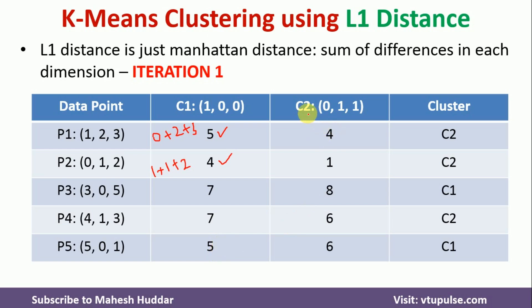Next, the distance from C2 to P1: 0 minus 1 is minus 1 with absolute value 1, 1 minus 2 is minus 1 with absolute value 1, and 1 minus 3 is minus 2 with absolute value 2. Adding these gives 4. Similarly, I have to find the remaining distances.